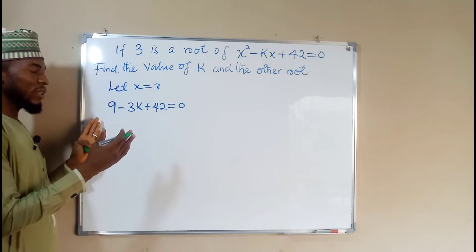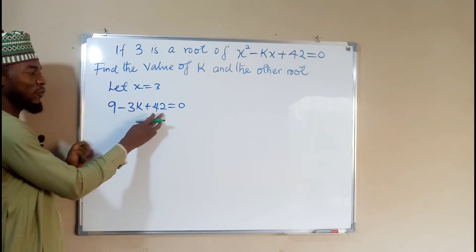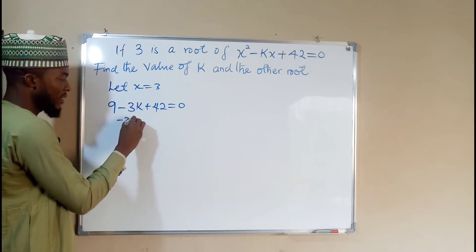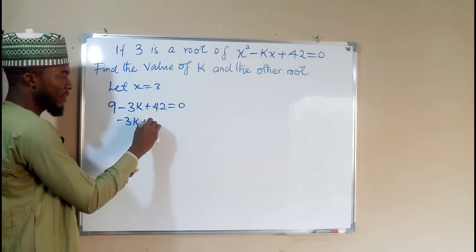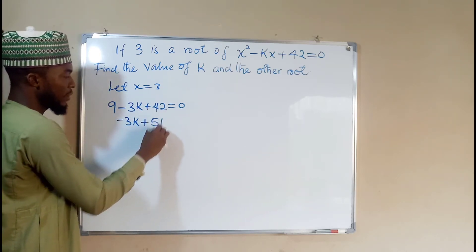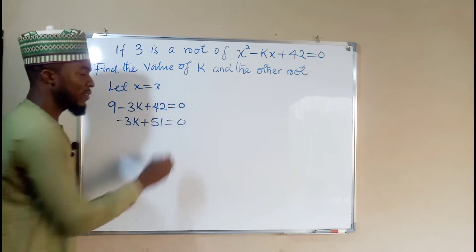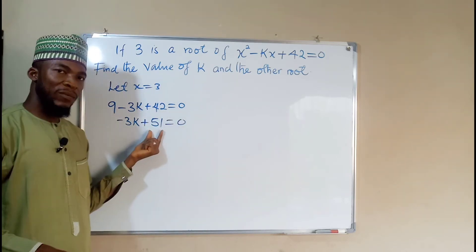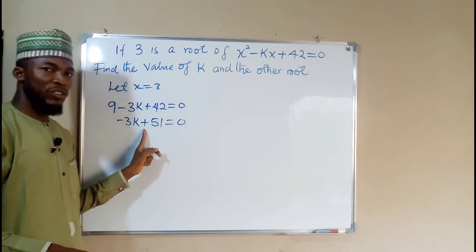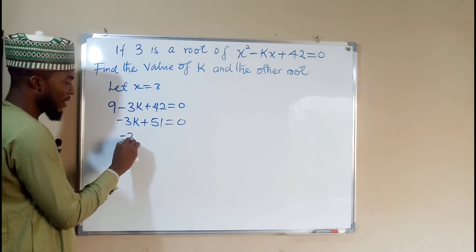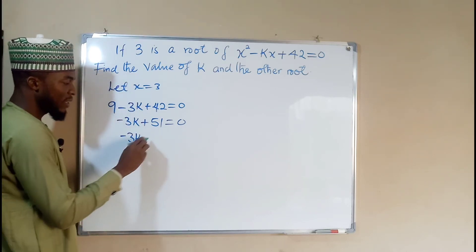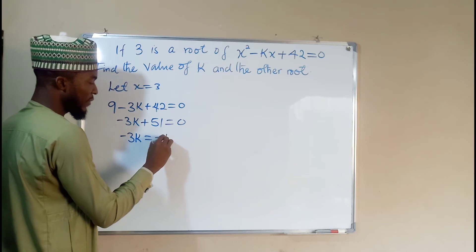Now we are going to add the like terms together, 9 and 42, negative 3k. This plus this is 51, the whole of this equal to 0. By taking 51 to the right, the sign will change to negative. So we have negative 3k equal to negative 51.